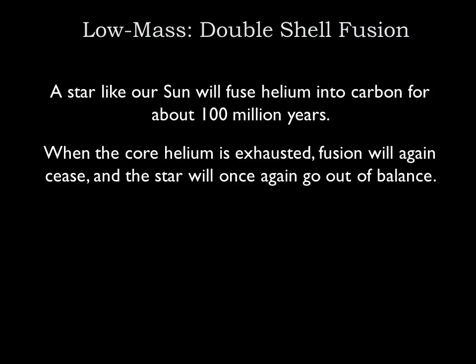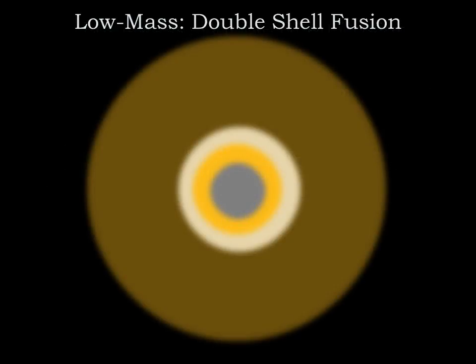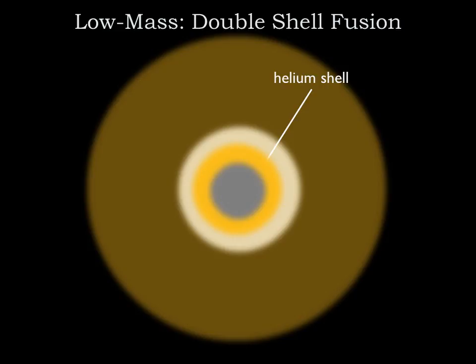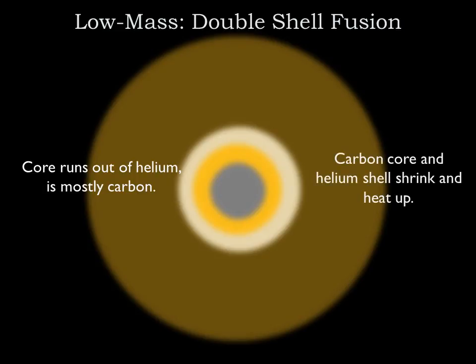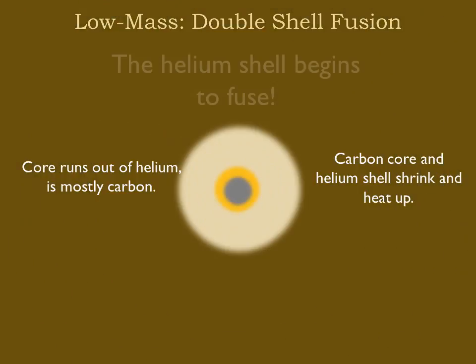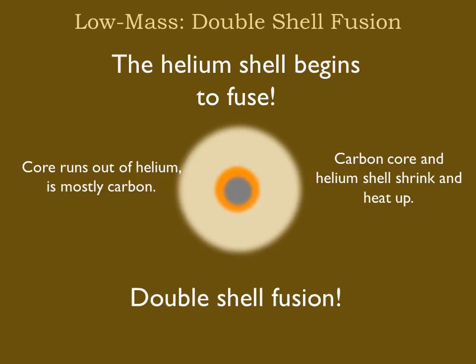Helium burning in the core will continue until the helium runs out. Our sun will fuse helium into carbon for about 100 million years — one percent of the time it will have spent on the main sequence. When the core helium is exhausted, fusion will again cease and the star will go out of balance. The result of helium fusion is to create a carbon core, with unburned helium in a shell surrounding it, and surrounding that is the hydrogen-burning shell. As the helium runs out in the core, fusion there slows down, the core and helium shell both shrink and heat up, and the shell gets hot enough to fuse the unused helium — giving us a double shell fusion situation.